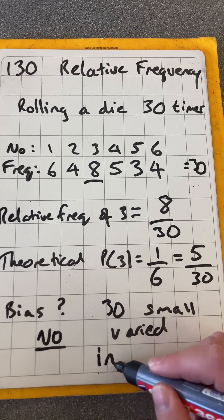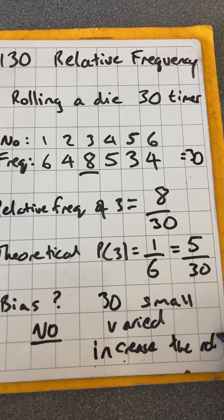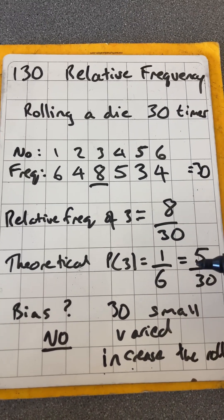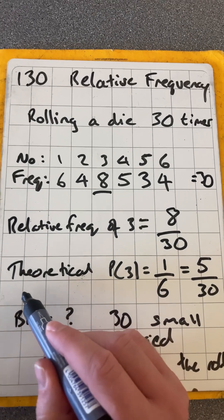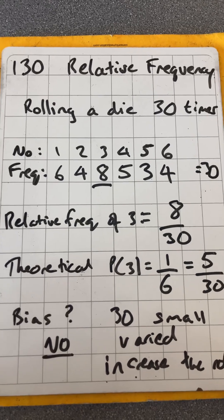And then to improve that, I would increase the number of rolls, maybe to 60 or 100. And then eventually you'd see the theoretical and the experimental probabilities getting closer to each other.